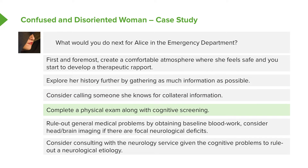Also complete a physical exam along with cognitive screening, a mental status exam, and a mini mental status exam. Rule out any general medical problems that could potentially be happening here. Do this through your physical exam, obtaining baseline blood work, and consider head imaging as well. Do a neurological exam to see if there's any reason why she's not recalling important information about herself. Consider getting a neurology consult involved, which can help tease out whether the root cause of her memory disturbance is in fact a brain or neurological problem.